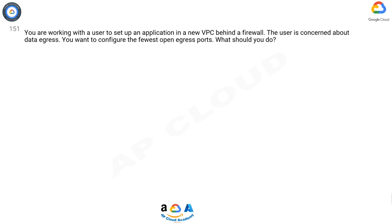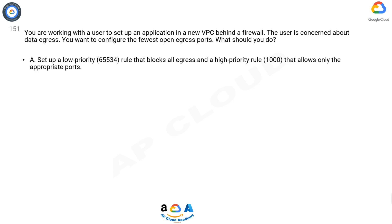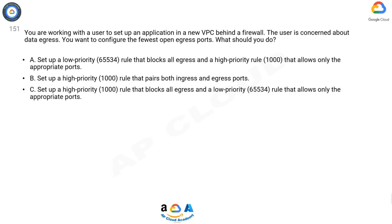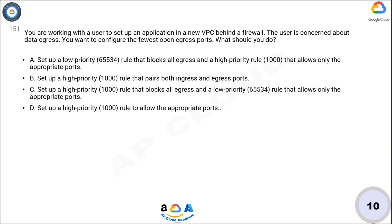What should you do? A: Set up a low priority (65534) rule that blocks all egress and a high priority (1000) rule that allows only the appropriate ports. B: Set up a high priority (1000) rule that pairs both ingress and egress ports. C: Set up a high priority (1000) rule that blocks all egress and a low priority (65534) rule that allows only the appropriate ports. D: Set up a high priority (1000) rule to allow the appropriate ports. Now take 10 seconds to think about the answer.